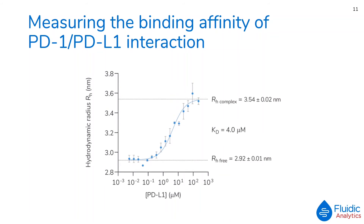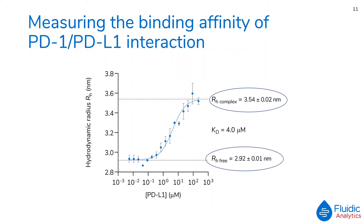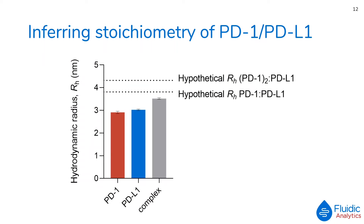Returning to our binding curve, the other data that is uniquely provided by MDS is the absolute size or hydrodynamic radius of the labelled species — RH free — and the complex — RH complex. This quantitative measurement allows researchers to confirm the quality of their labelled ligand through observation of the RH free value. In this case, the observed size was consistent with PD-1 being a glycosylated protein. The RH complex value is useful in determining reaction stoichiometry.